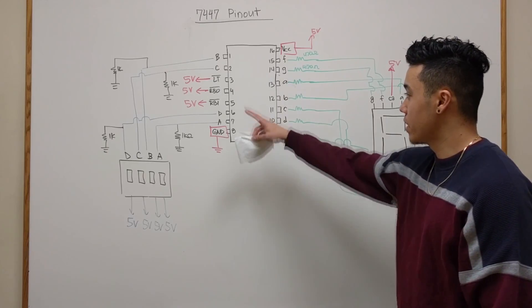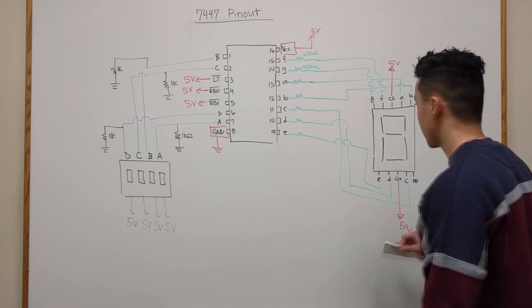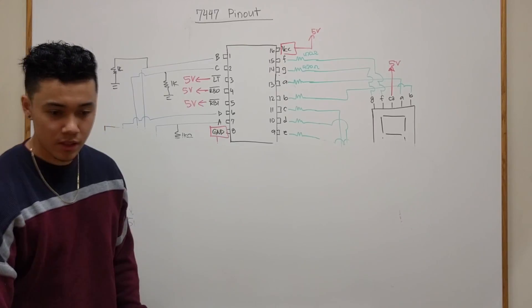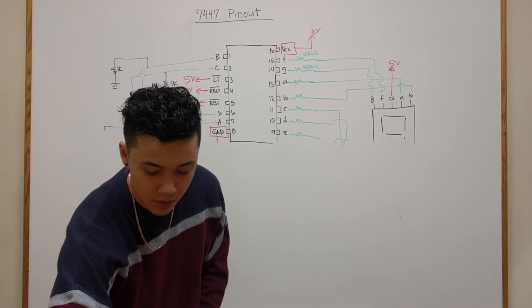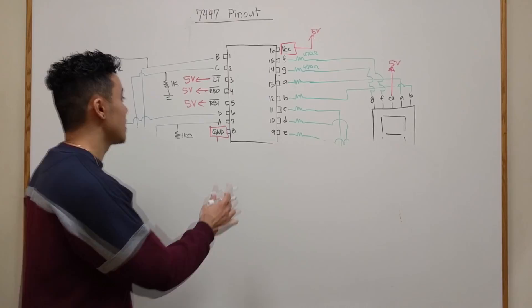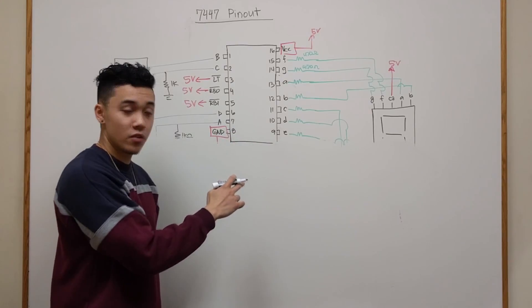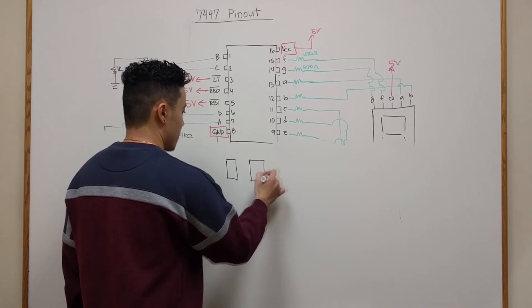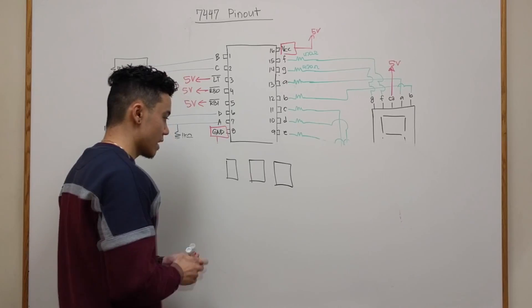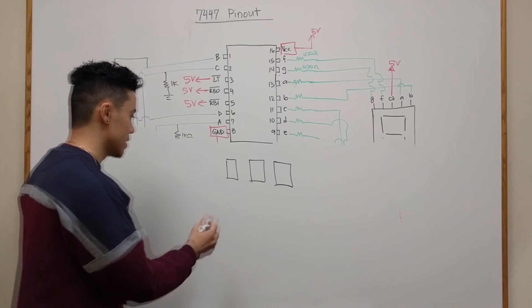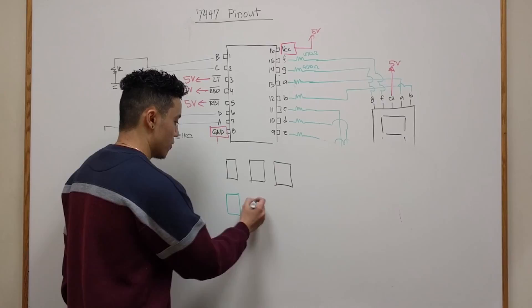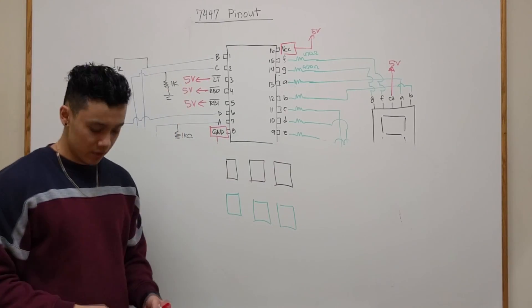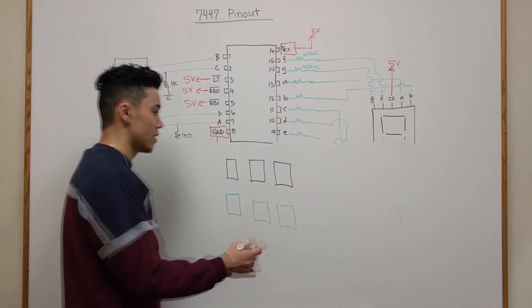Next I'm going to go over RBO and RBI if you are working with multiple 7 segment displays. So now suppose that we're working with three 7 segment displays. We're going to have three of these 7447 chips, so we're going to need three decoders. And of course we're going to have seven segment displays. So we'll have one display here, one display here, and one display here.